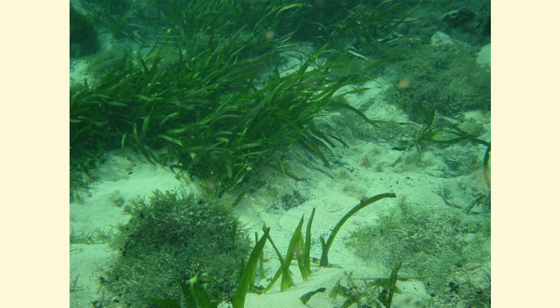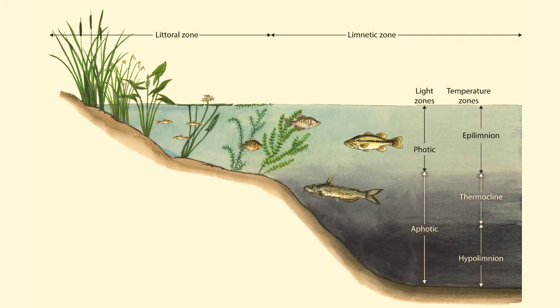Only in shallow areas, such as around the shoreline or islands, will there be enough sunlight reaching the bottom to allow plants to grow. These shallow areas are called the littoral zone. In at least some places, the water on a lake is too deep for plants to grow on the bottom. Lakes often include a transition zone containing a narrow band of wetlands extending out from the shore, and the ecology of this shallow shoreline zone is a lot like pond ecology.